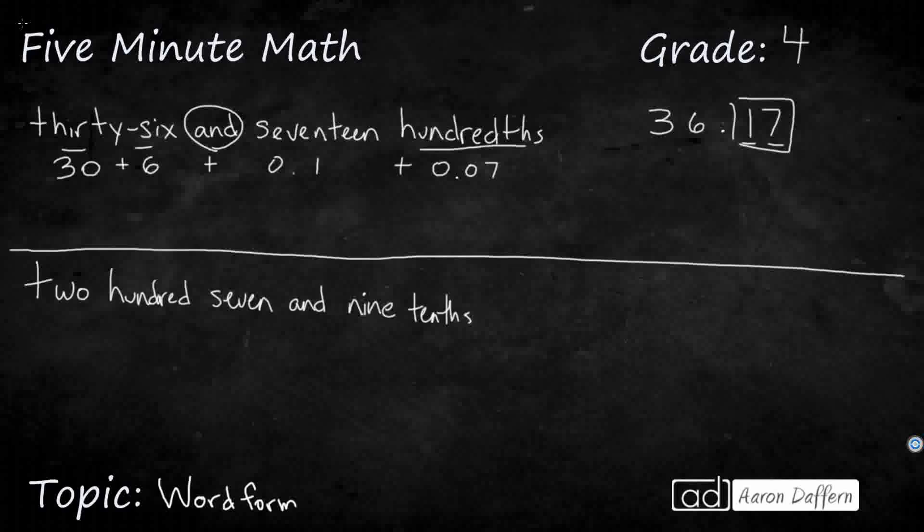So that 17 hundredths actually has a 1 in the tenths place. So if you are given a problem and it asks you to go from word form and say, what is the value of the 1 in the tenths place, it's going to be a little bit tricky because you're not really saying that value like you are with a 30 or a 6. We could also do the same thing with expanded notation, right? We can say it's 3 times 10 plus 6 times 1. Now 17, remember, we need to break that up into a 10 and a 7. So it's going to be 1 times tenths, and then that's 7 times its place value location, 1 hundredths.